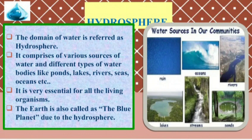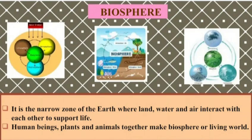Next is hydrosphere. The domain of water is referred to as hydrosphere. It comprises various sources of water and different types of water bodies like ponds, lakes, rivers, and oceans. It is very essential for all living organisms. The earth is also called the blue planet due to the hydrosphere.